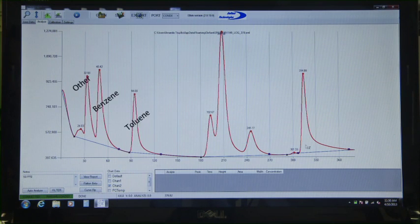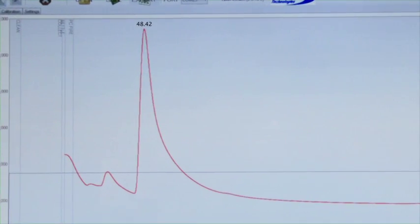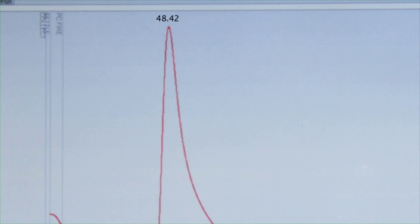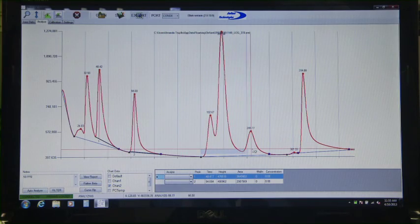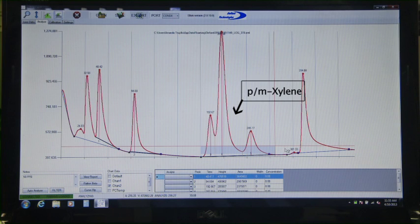Each peak is associated with a different analyte in the calibration standard. If you are ever unsure of the order of elution, the analytes can be run one at a time to determine their individual retention times. Some analytes, like paraxylene and metaxylene, cannot be separated on the Frog's 4.8-meter column, so they will combine to create one peak.